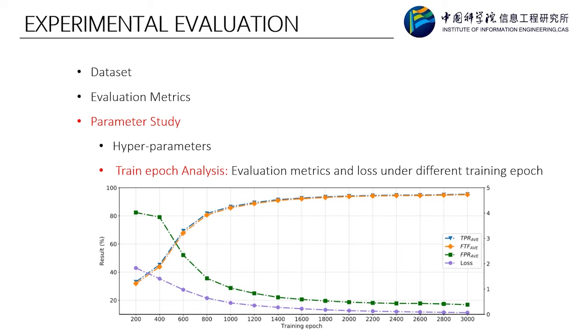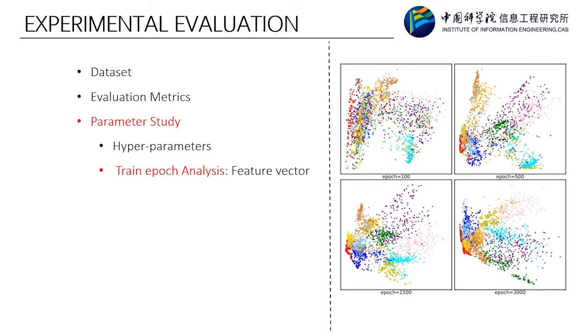In addition, we visualized the feature vector of the flow during training. The high-dimensional feature vector is reduced to two dimensions by PCA and displayed on the plane, as shown in the figure. When the number of training epochs is 1500, the distribution of the feature vectors is no longer chaotic, and the feature vectors between the categories have a clear dividing line.